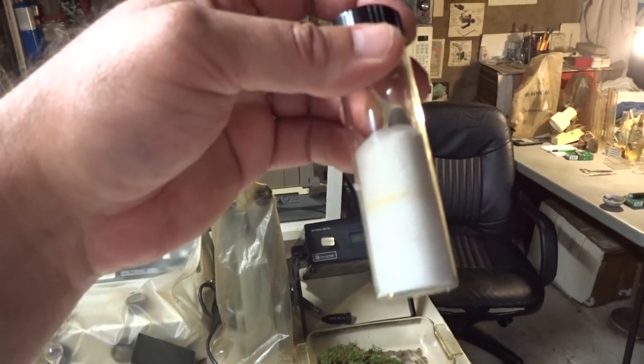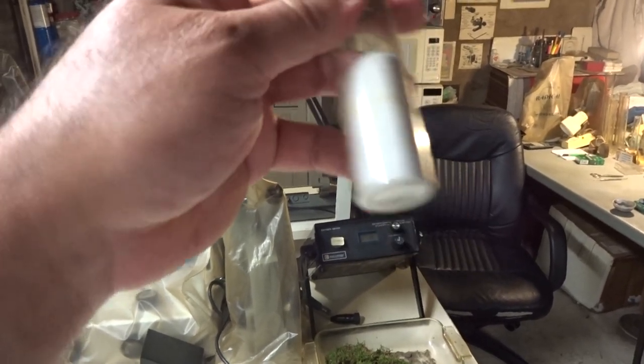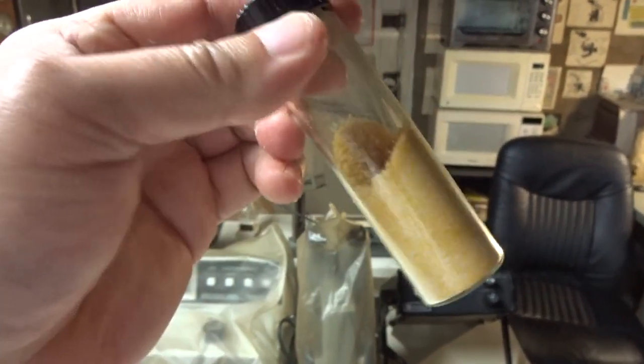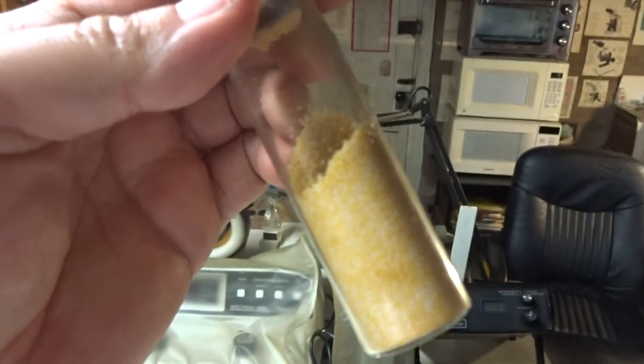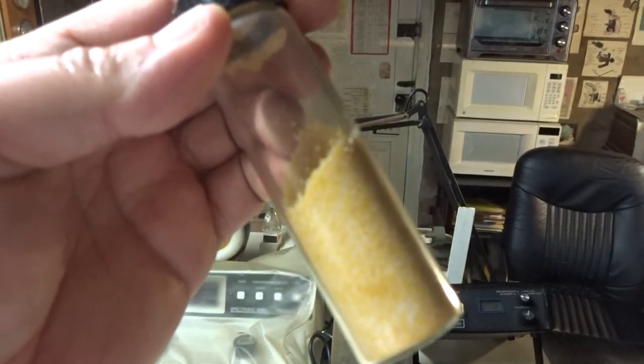Now I'm going to vigorously shake the tube. Now we see the two white solids have turned into a yellow color. What is going on?